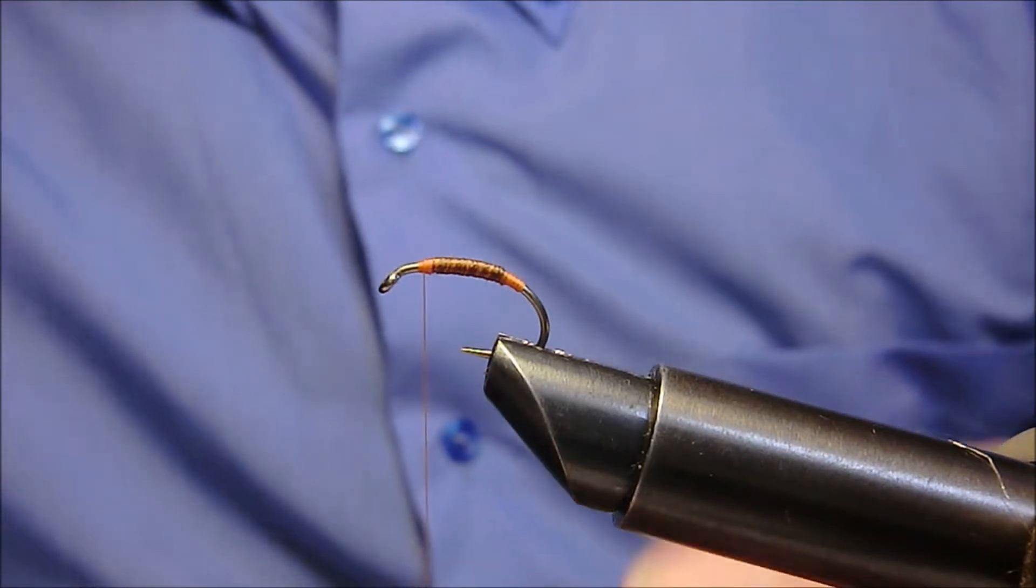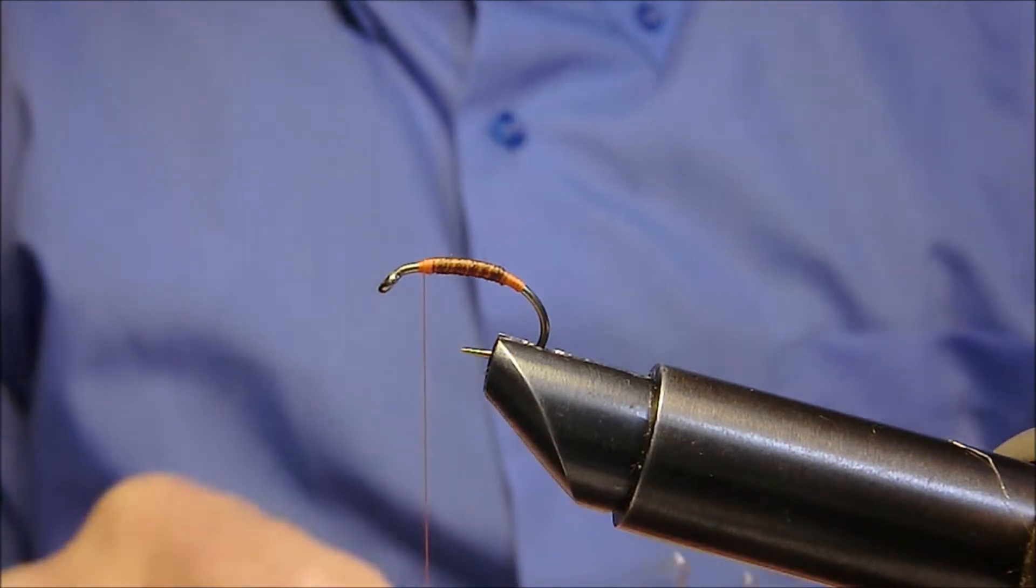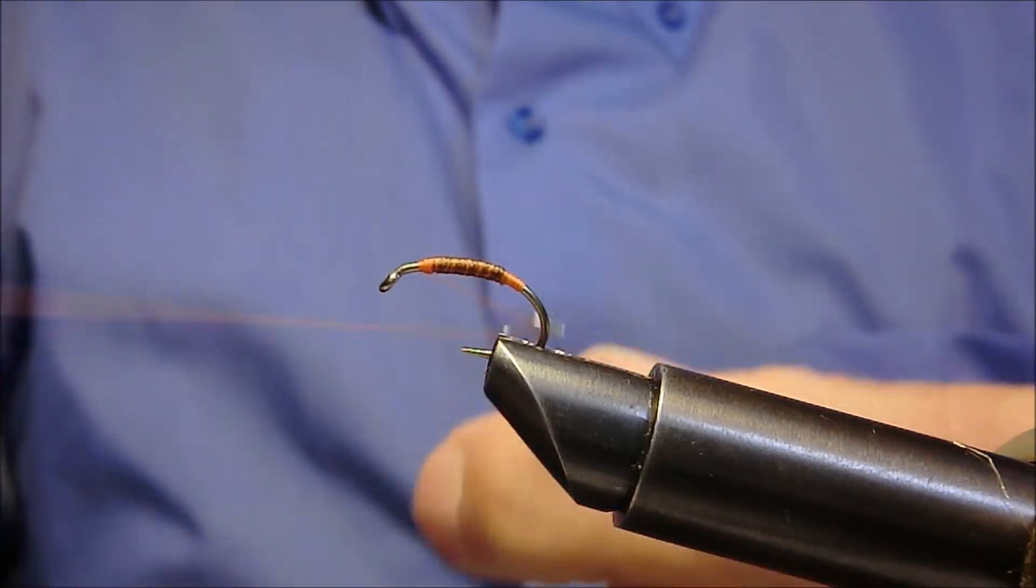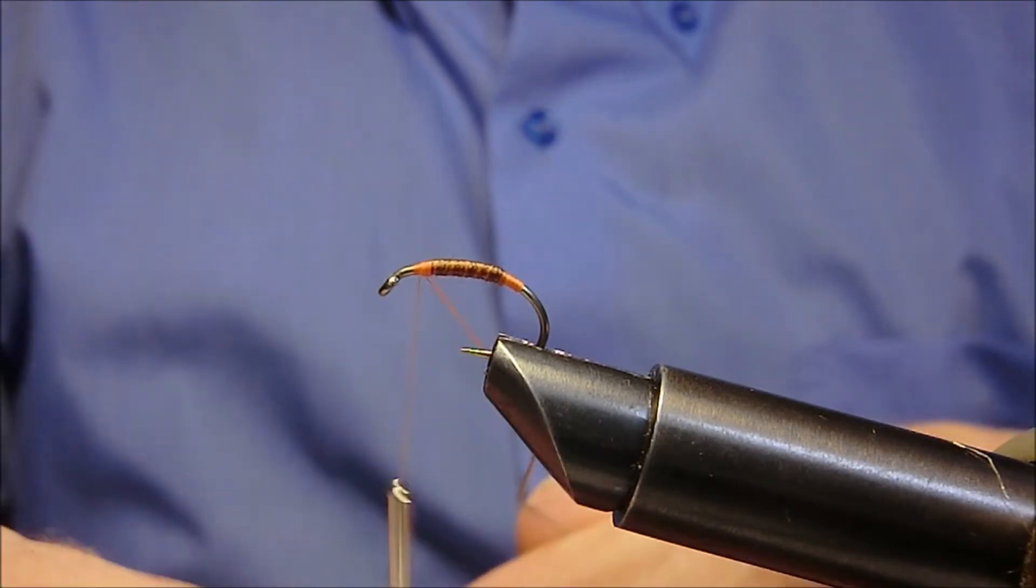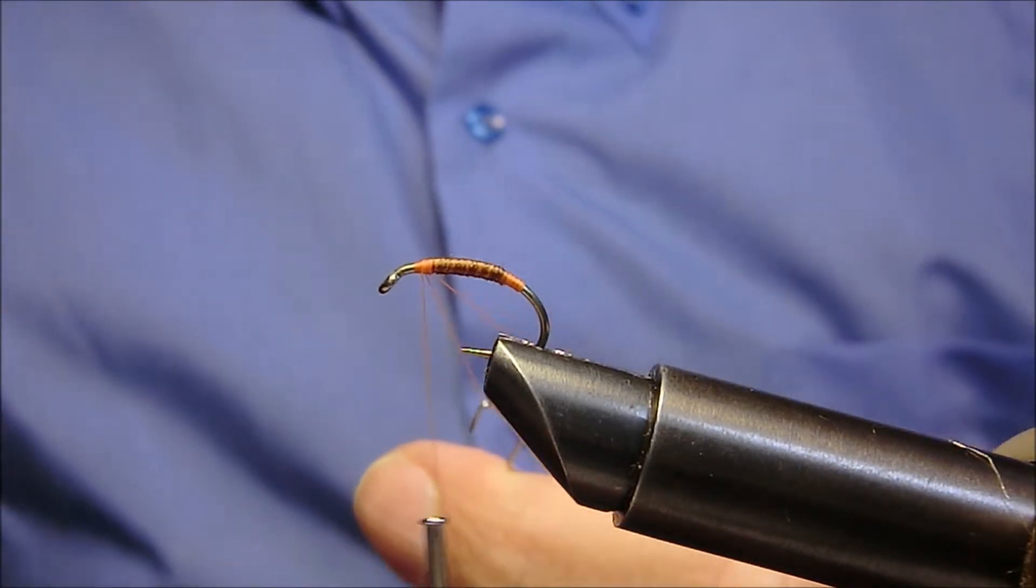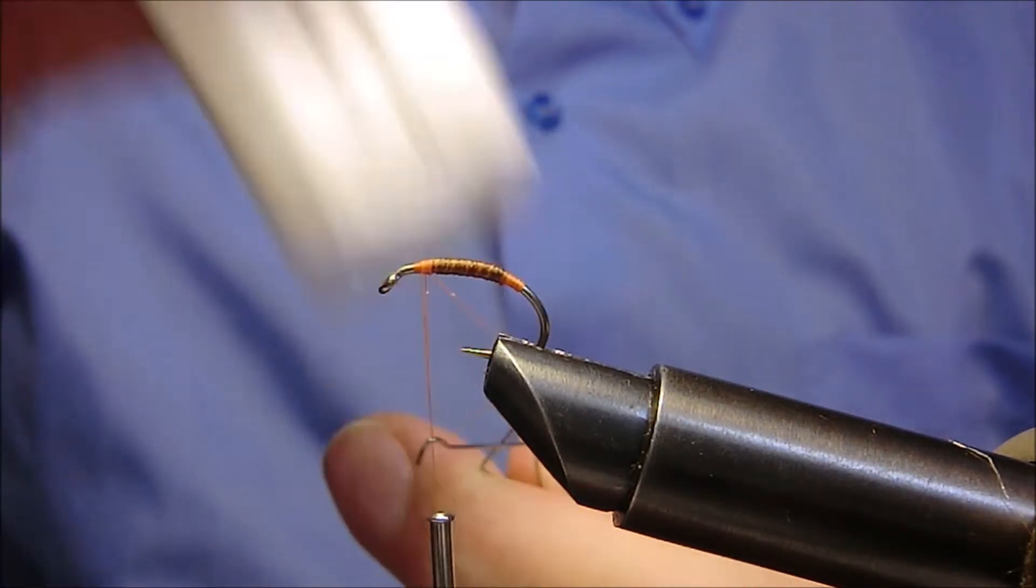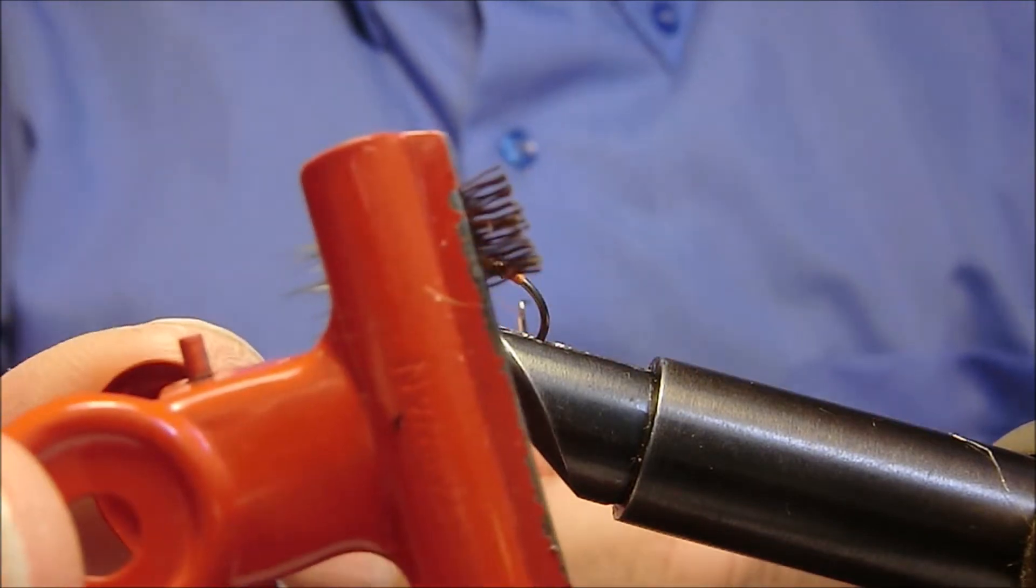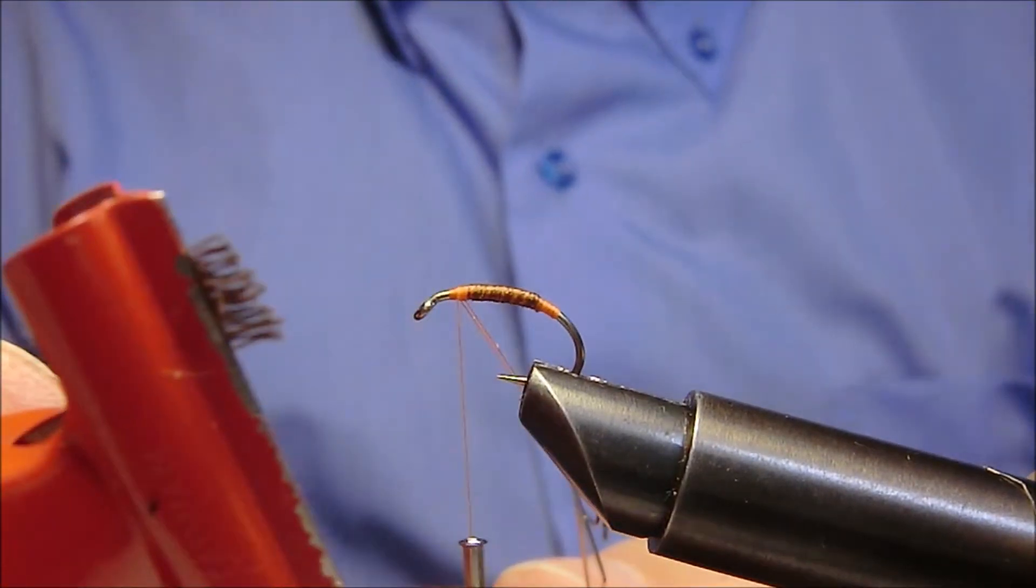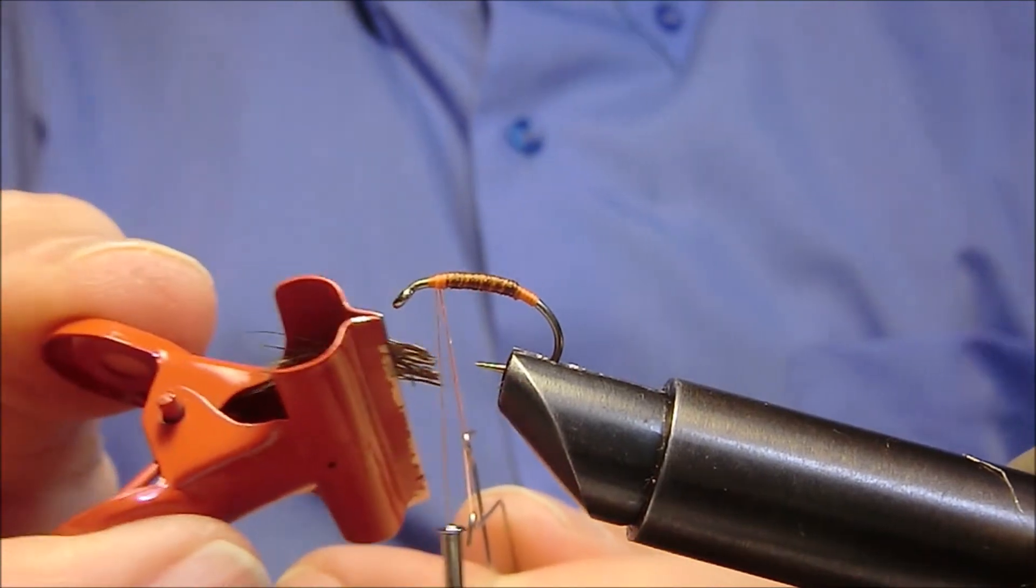Formiamo ora con l'apposito attrezzino un'asola sul filo di montaggio. Che sporcheremo di pece. Inseriamo all'interno del pelo di cervo marrone preventivamente pareggiato.